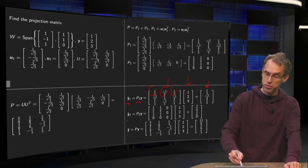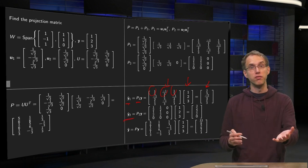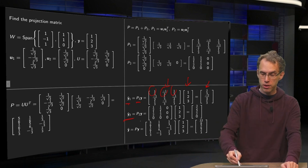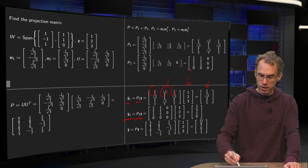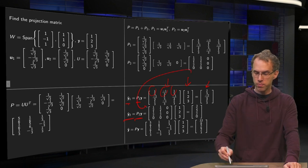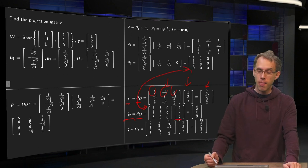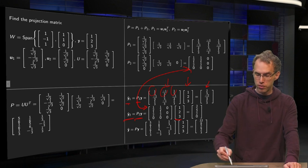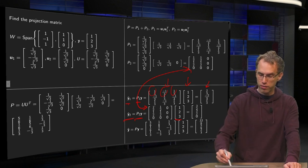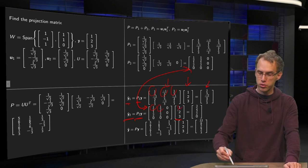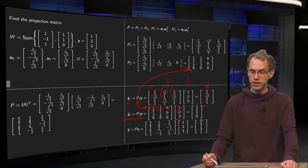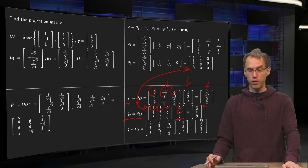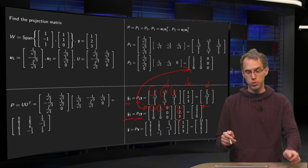Similarly, you can compute your ŷ2, the projection of y onto u2, using your P2. So that equals P2 times y. Here we have our P2, and here again we have our y. For the first component, you get 1/2 times 1 equals 1/2, plus 1/2 times 2 equals 3/2, plus 0, giving you 3/2. So there you have your ŷ2, the projection of y onto u2.